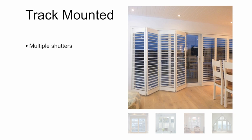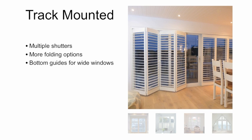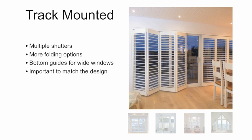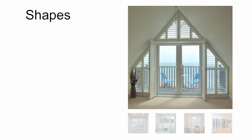Rather than being hinged at the sides, track mounted shutters have small wheels mounted at the top that run along a top track. This means the weight is supported and you can have four, six, eight, or even twelve shutters hanging from the track. Track shutters usually come with a bottom guide, making it easier to slide the shutters open or closed. With the track option it's still important to match the number of shutters to the number of sections in the window or door, and all shutters need to be the same size to operate properly.